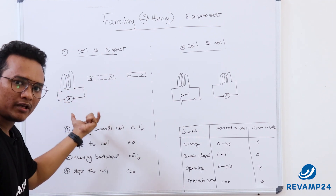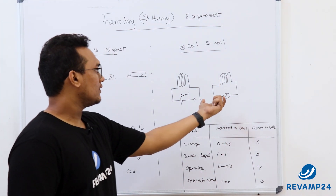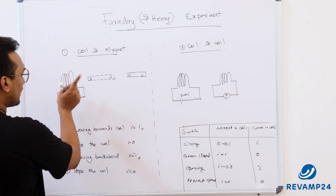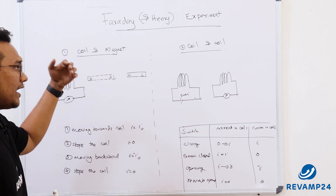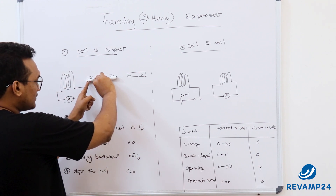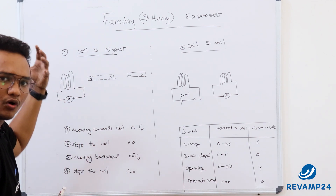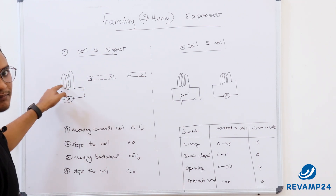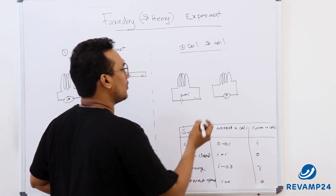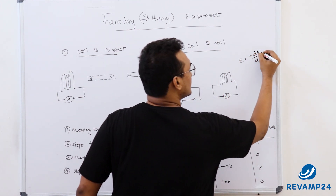If the conclusion were that relative movement alone produces induced EMF, that would be wrong — because in the second experiment there was no relative movement, yet an induced current was obtained. So it is neither relative movement alone nor magnetic field alone. When the magnet was stopped, there were magnetic field lines from north to south pole, but no current. So the reason for induced EMF is -dΦ/dt, where Φ is the magnetic flux.